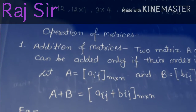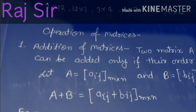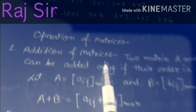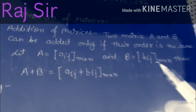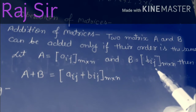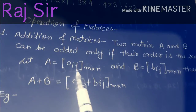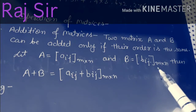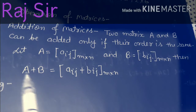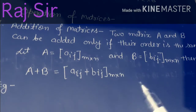Now let us start operations of matrices. Students, the first operation of matrix is addition of matrices. Two matrices A and B can be added only if their order is the same. Let A equal to Aij of order m cross n, and second matrix B equal to Bij of order m cross n. Therefore, addition A plus B is defined and denoted by A plus B, equal to Aij plus Bij of order m cross n.